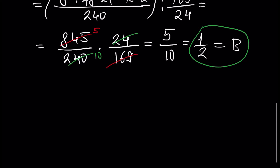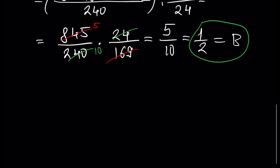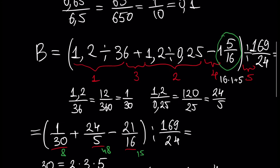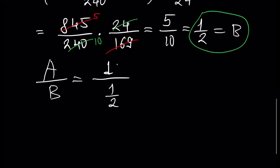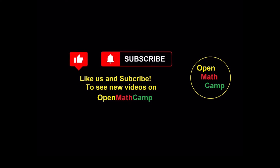All in all, we have to divide A by B. B is 1 over 2, and our A was 10. We can write this as 10 times 2 over 1, which is 20. And this is the final answer for our problem. Thank you for your attention. Like us and subscribe to see new videos on OpenMathCamp.